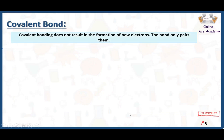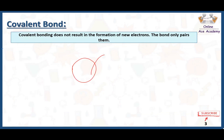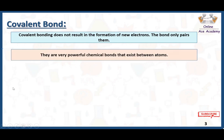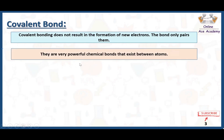Here we have some properties of covalent bond. Covalent bonding does not result in the formation of new electrons — the bond only pairs them — because in covalent bond there is no transfer of electrons. There are no cations and anions; there is just sharing of electrons, so simply there are no new electrons. They are very powerful chemical bonds that exist between atoms because they are sharing the electrons, and that is why they are strong chemical bonds.